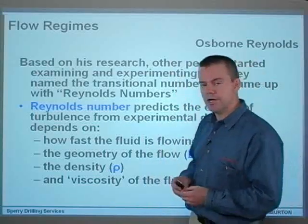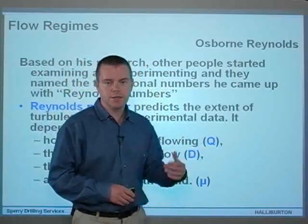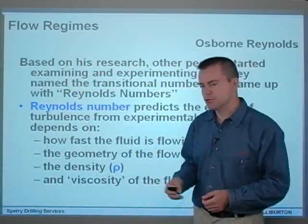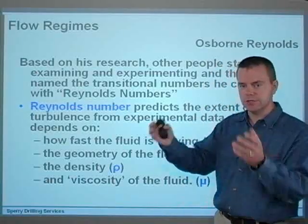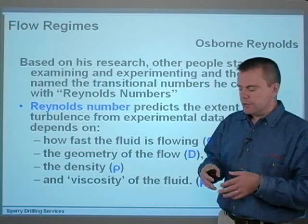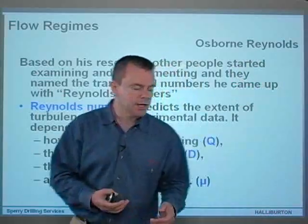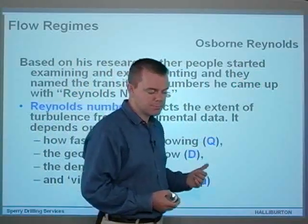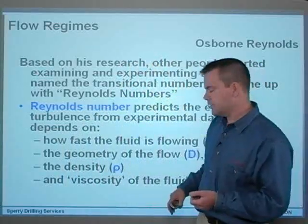The Reynolds number depends on how fast the fluid is flowing, which is Q for flow rate; the geometry of the flow, which is D in this equation — it could be either the depth of a channel, the diameter of a pipe, or the equivalent diameter of an annulus; the density of the fluid, which is rho; and also the viscosity of that fluid, which is the symbol mu.